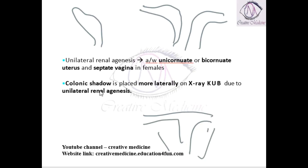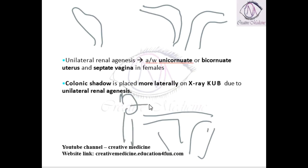On X-ray KUB, the colonic shadow is placed more laterally in cases of unilateral renal agenesis. Normally, if the kidney is present it lies laterally and the colon is placed more medially; but if the kidney is absent, the colon shifts laterally and the shadow is seen more laterally on X-ray KUB.